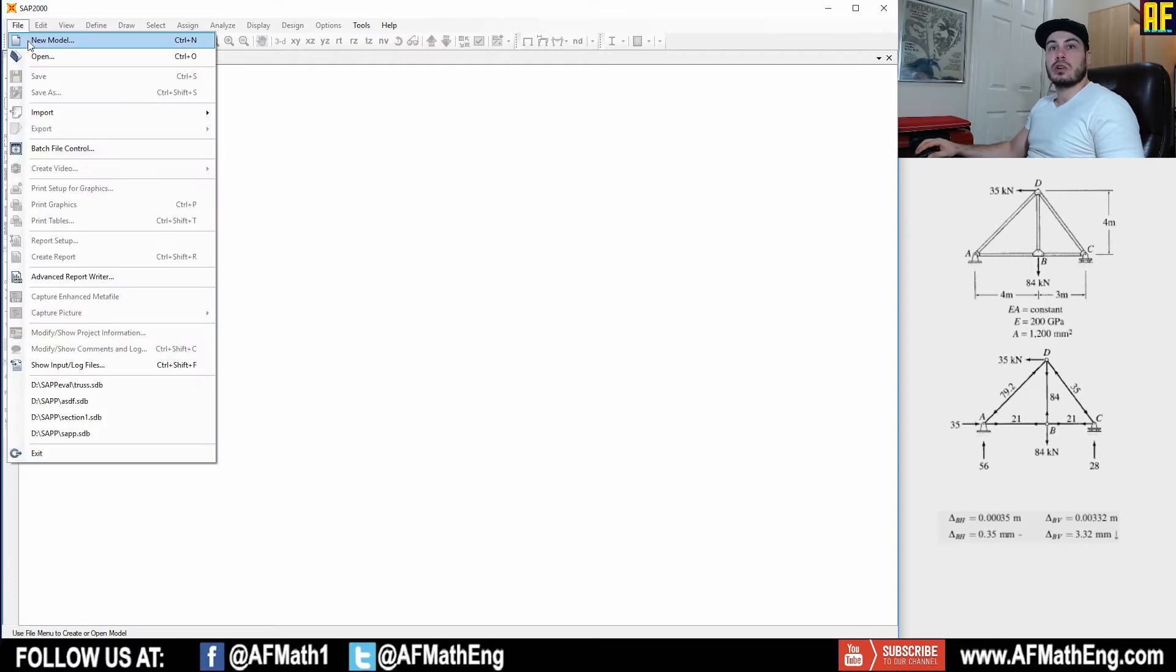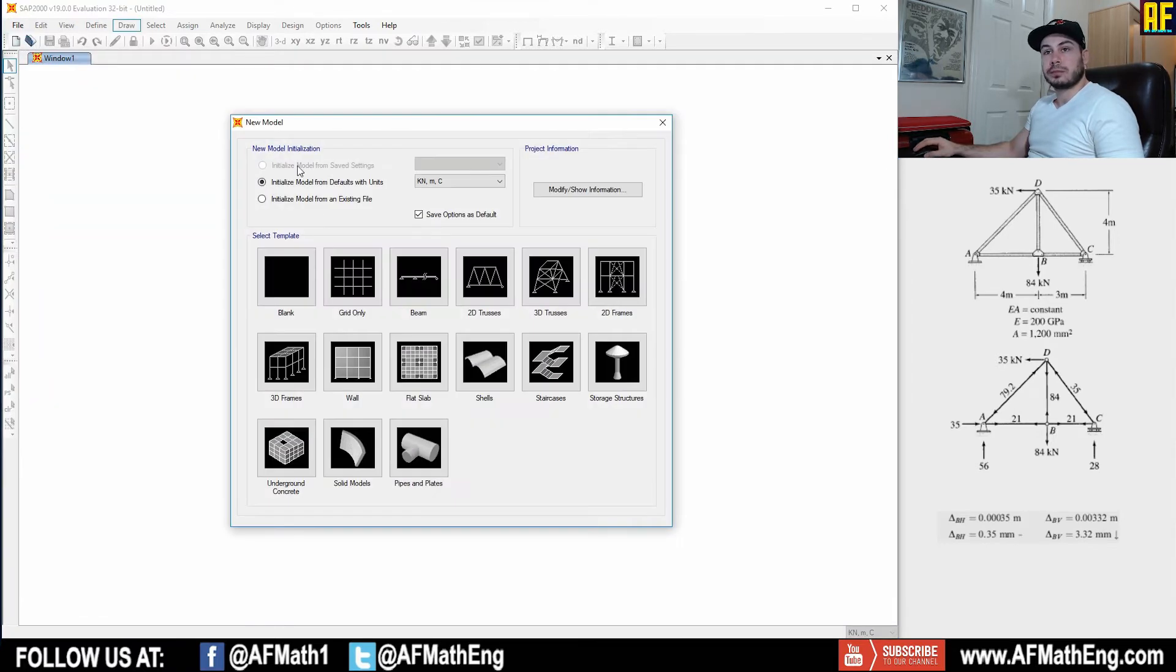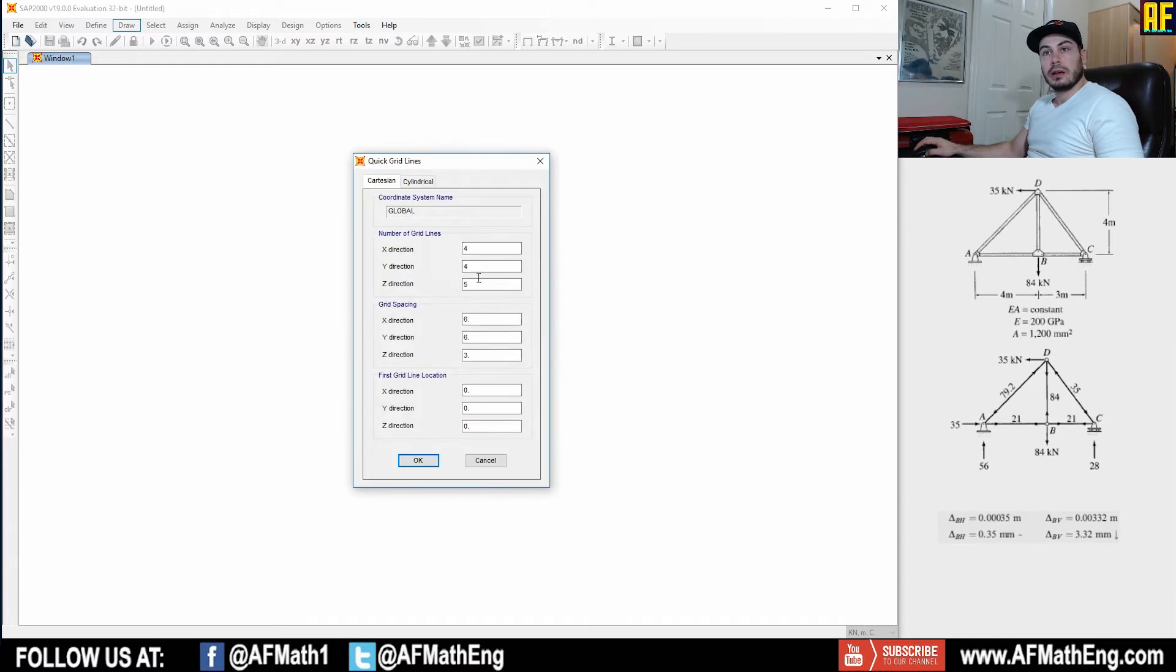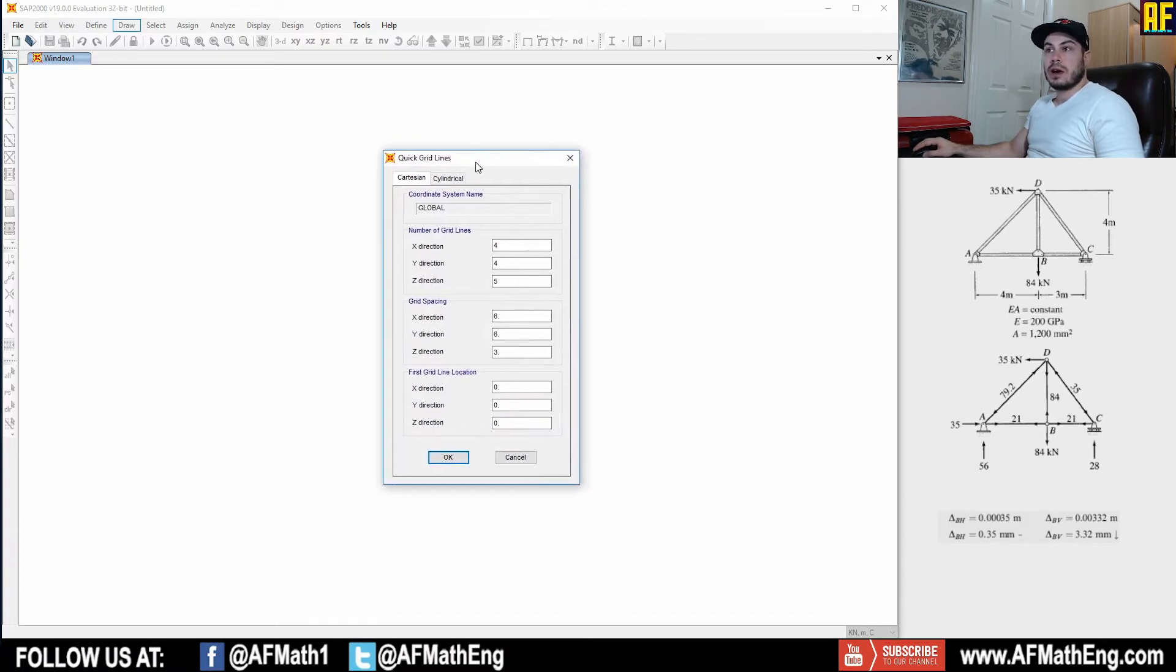So first we're going to go ahead and we're going to start our new model. So file new model. And we're going to go to grid only. So we're going to go to grid this time. Now, if you haven't watched our other video on beams, I highly suggest that you do that because I might kind of go a little quickly through these just to make the video shorter. So go back and check out that video if you haven't done it already. That was like our first video.